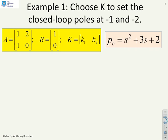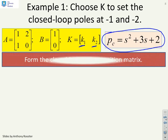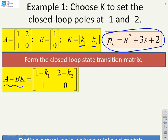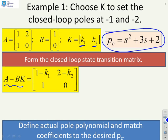A 2x2 example: given an A matrix and B matrix with K = [K1, K2], the desired closed-loop pole polynomial is P_c = s² + 3s + 2. The closed-loop state transition matrix A - BK is formed with [1 - K1, 2 - K2] on the top row and [1, 0] on the second row. The actual pole polynomial is then computed and matched to the desired polynomial.